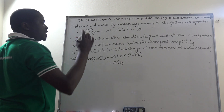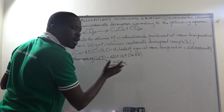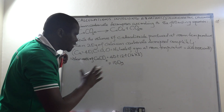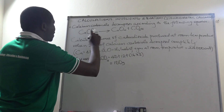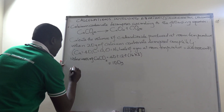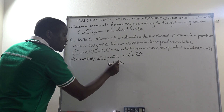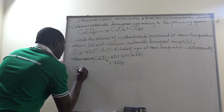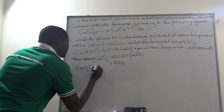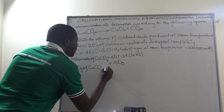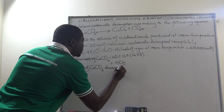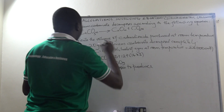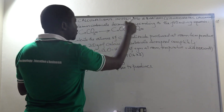Working from first principles, we write a set of sentences to make the calculation clear. One mole of calcium carbonate has a mass of 100 grams. So we say: 100 grams of calcium carbonate decomposes to produce...